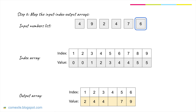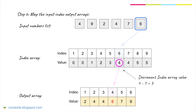Moving on to the last element which is 6. Find index 6 in the index array — the value is 4. Find index 4 in the output array and fill in the value. Again, we need to decrement the index array value.